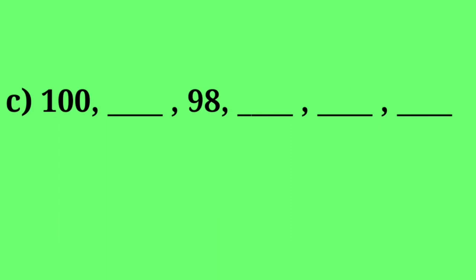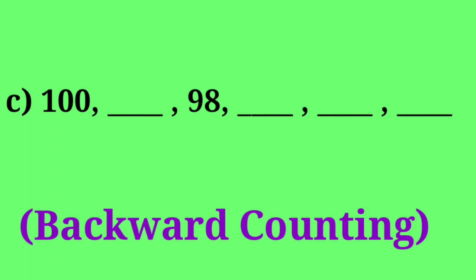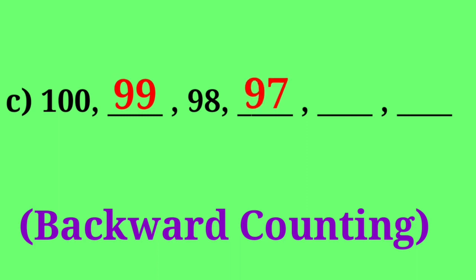If you observe here: 100, dash, 98, dash, dash, dash. The numbers given are 100 and 98, so that is backward counting. Write the missing numbers: 100 before is 99; 99 before is 98; 98 before is 97; 97 before is 96; 96 before is 95.